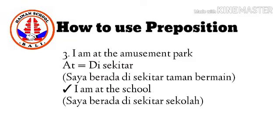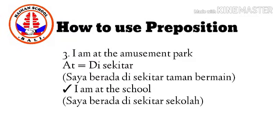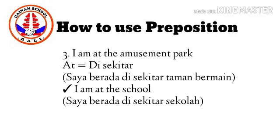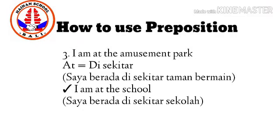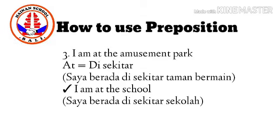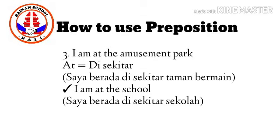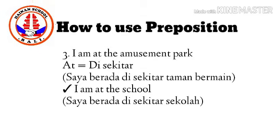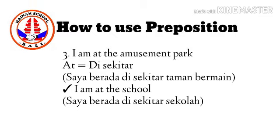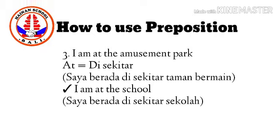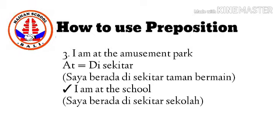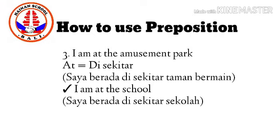The third example is: I am at the amusement park. Here we use preposition 'at' to describe about a place. Pada contoh di atas, kata preposition 'at' memiliki arti 'di sekitar'.